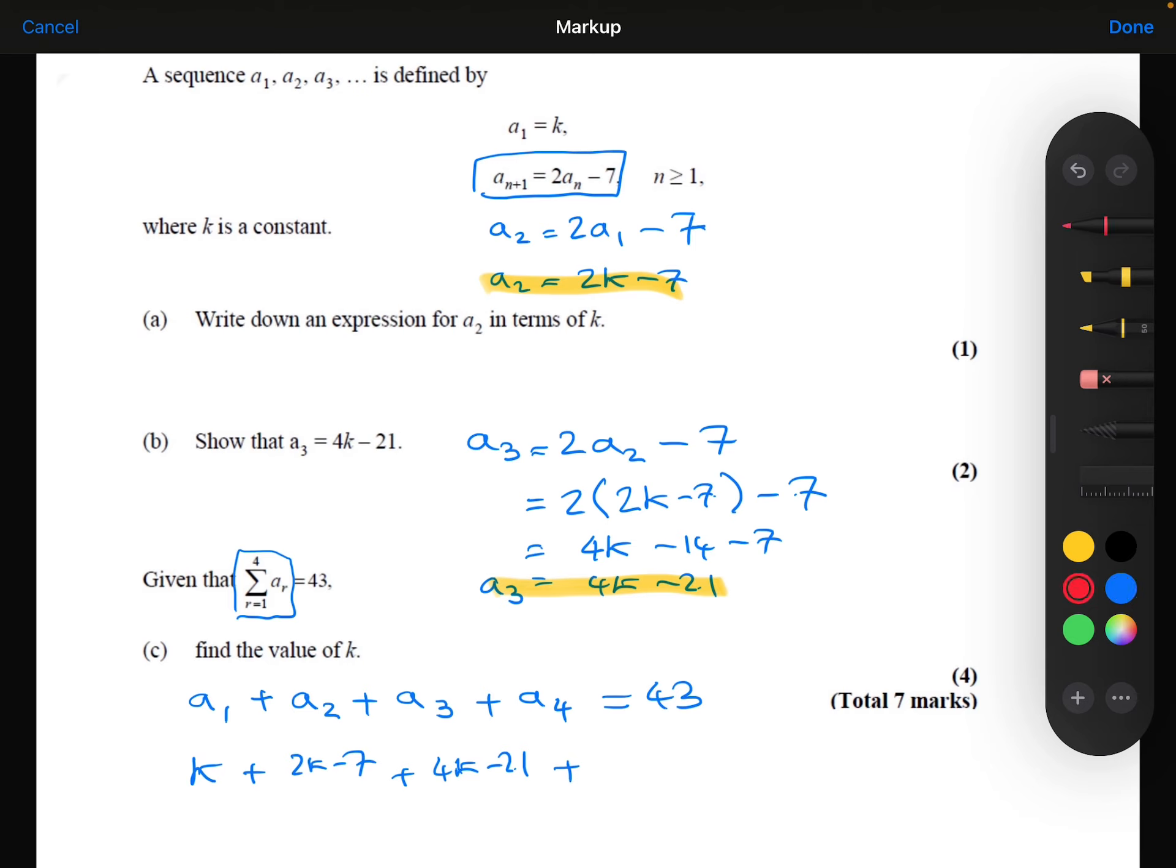So now, again, I can come back to our rule here and say that a₄ would be equal to 2 times a₃ minus 7. And we know that a₃ is 4k minus 21. So two lots of 4k minus 21 minus 7, which is 8k minus 49. So that's a₄.